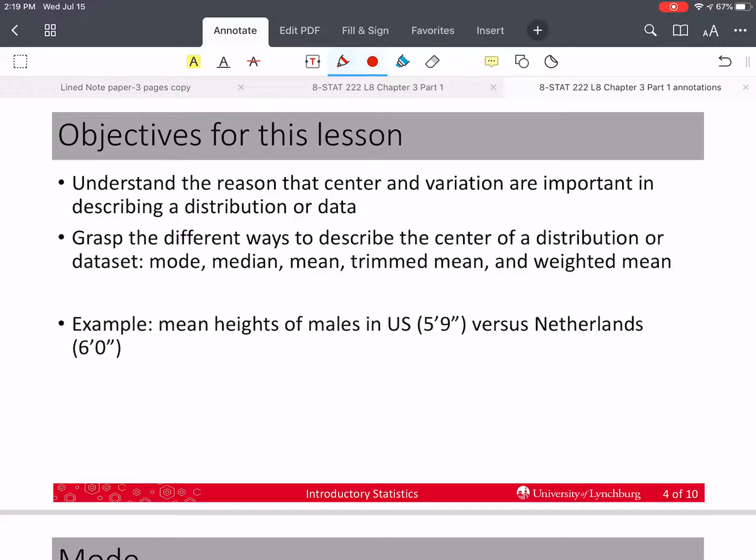To first understand about these two measures, let's talk about the mean heights of males in the U.S., which happens to be right at 5'9", versus the mean height of males in the Netherlands, which happens to be right at 6' even. If I'm a male in the U.S., and my height is 5'10", and I go and visit the Netherlands, and I know that the mean height is 6', I'm going to unconsciously or subconsciously expect that all the males are taller than me. But of course, that's not exactly true, necessarily.